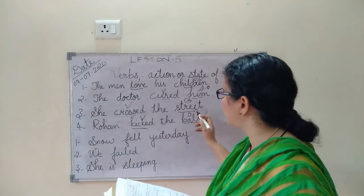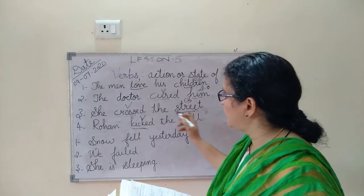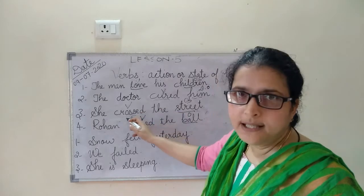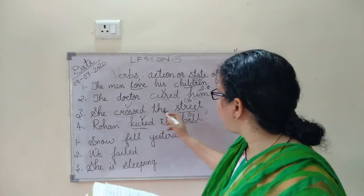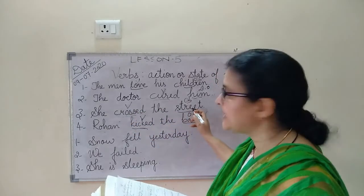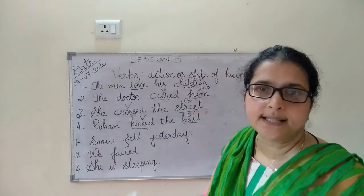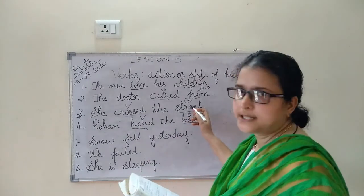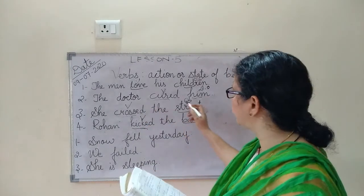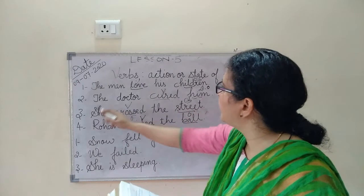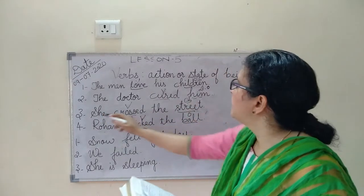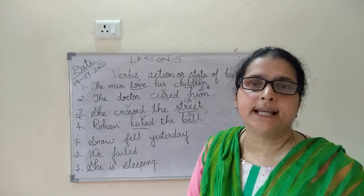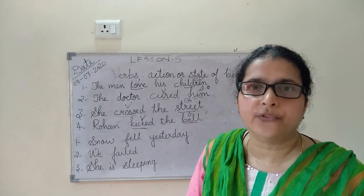Third example: She crossed the street. Crossed is a transitive verb and the object is street. The sentence is complete: subject, verb, object.